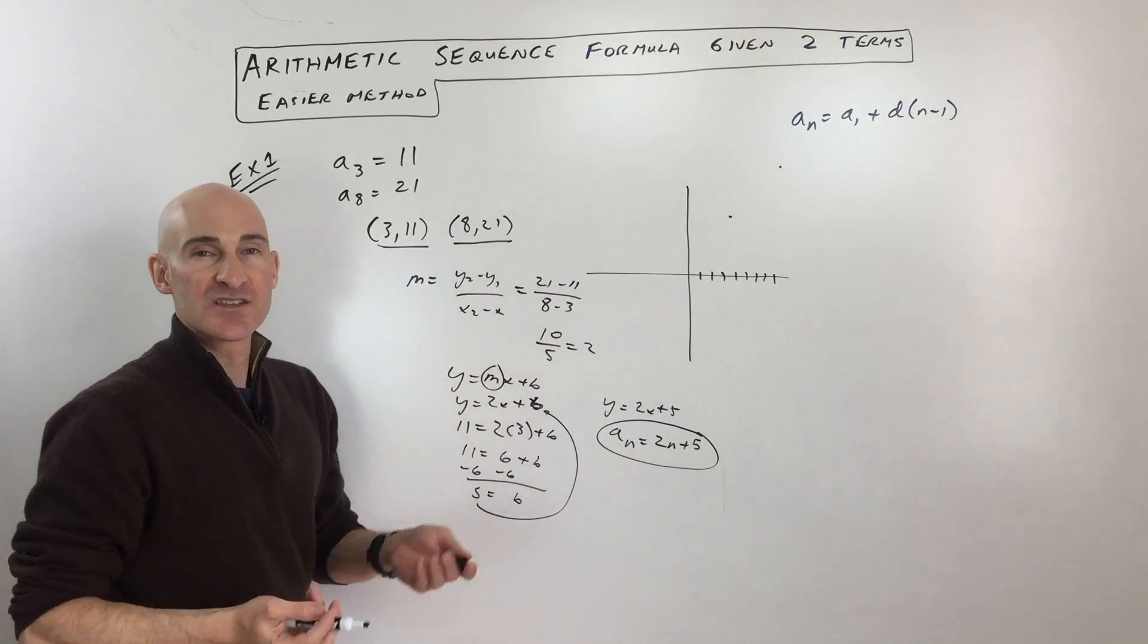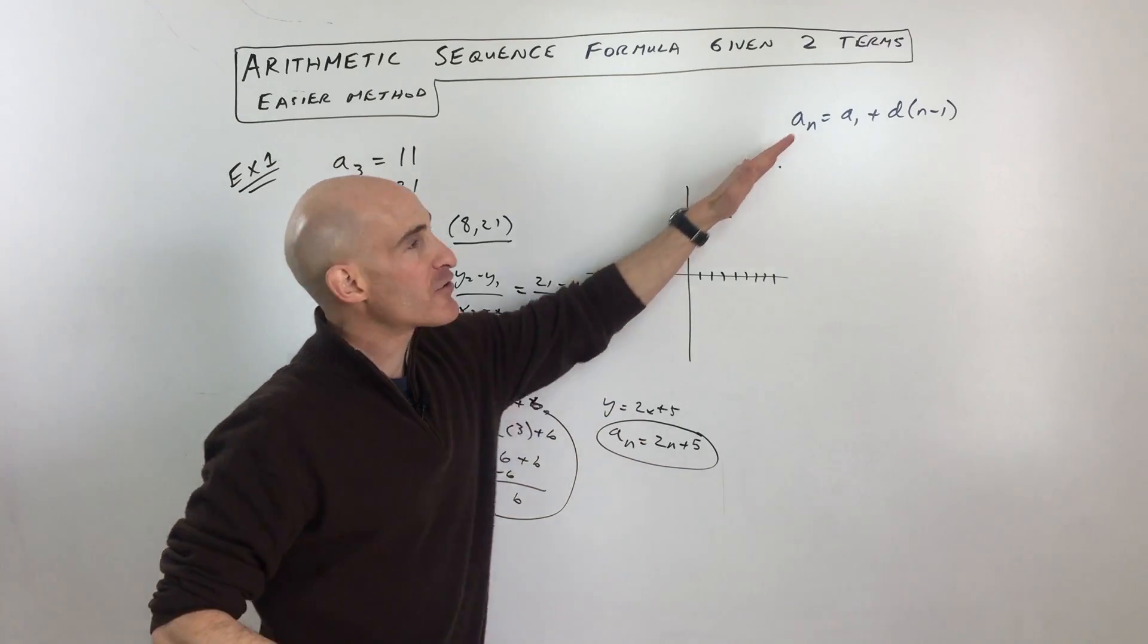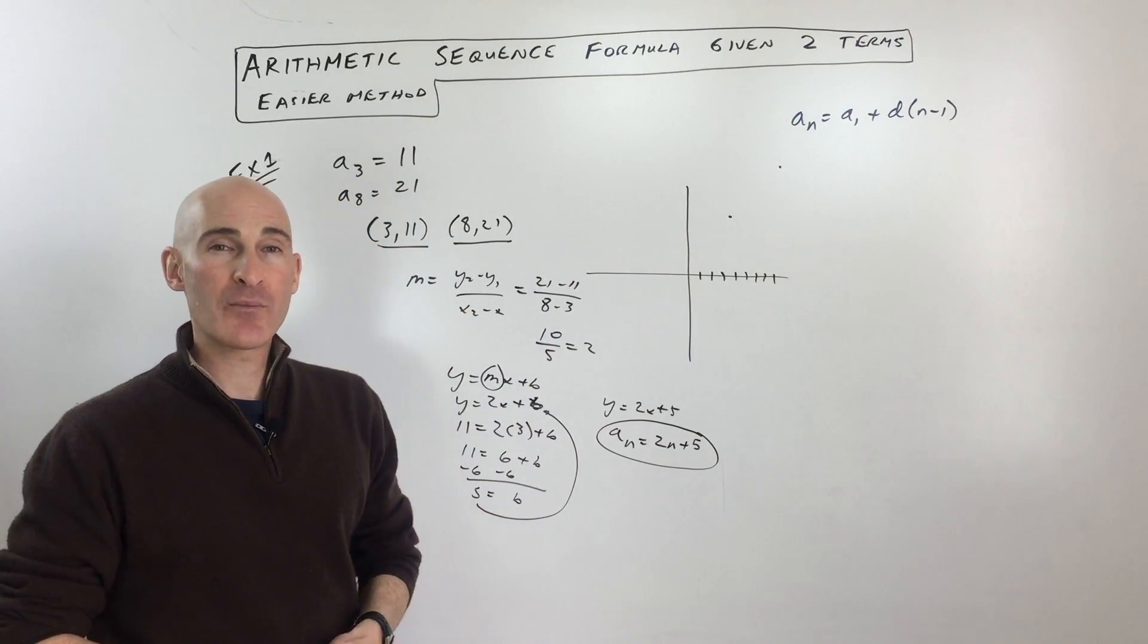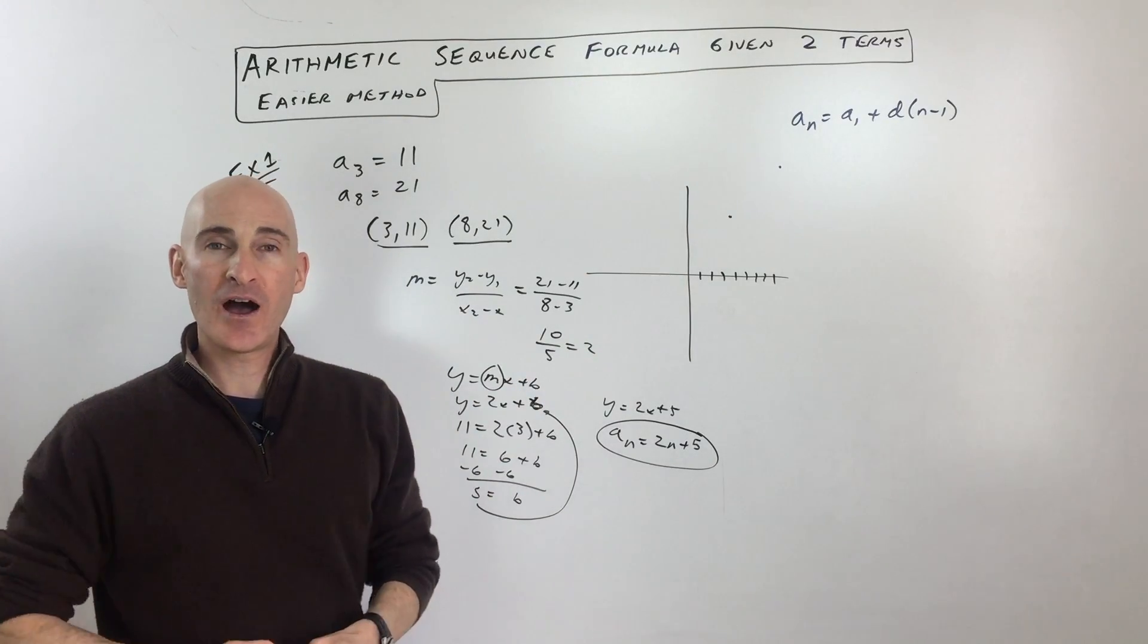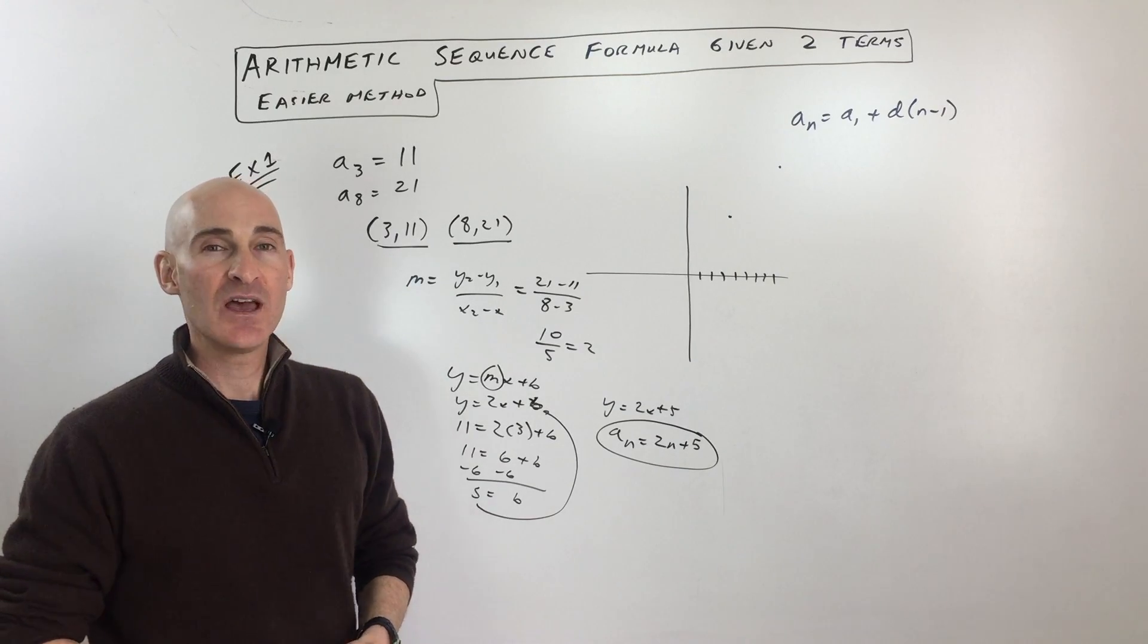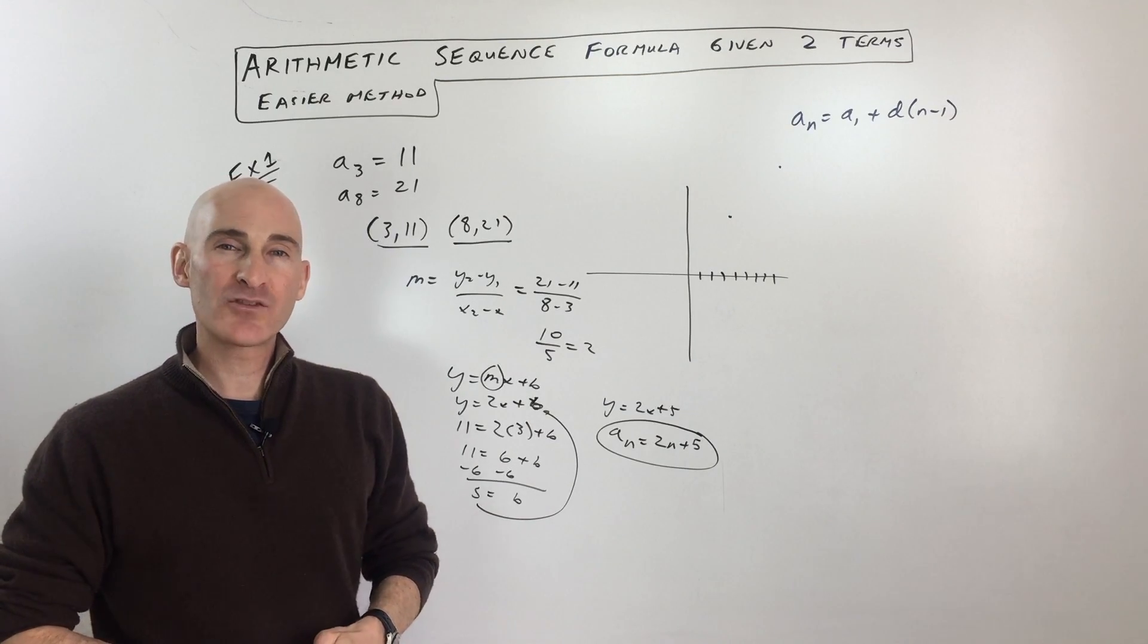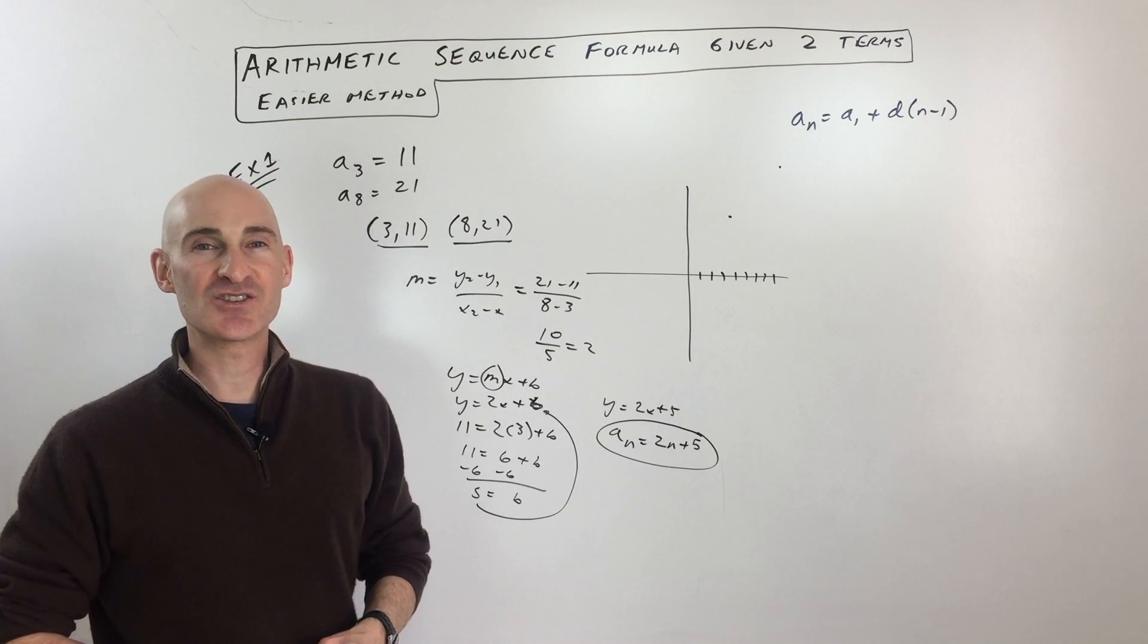Basically what we're doing is we're using the concept that arithmetic sequences are linear—they're going up at a constant rate and that constant rate is the slope. I hope you understand this video a lot better about how to work with arithmetic sequences. Subscribe to the channel, check out more math tutoring videos on my YouTube channel Mario's Math Tutoring, and I look forward to helping you in future videos. I'll talk to you soon.